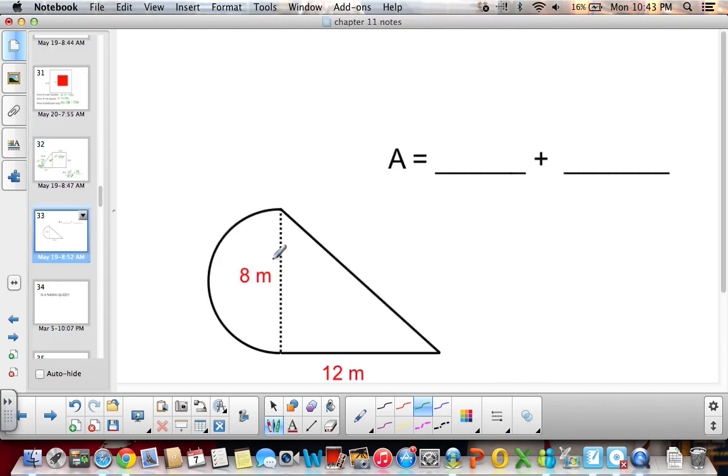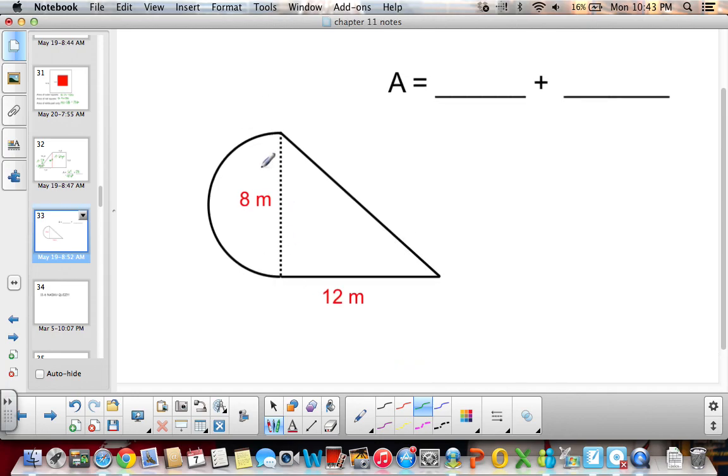And then our last example deals with a semicircle, which is this half circle right here. So we have a circle and we have a triangle. Remember the area of a circle is pi r squared. A semicircle, which is half of a circle, this is a full circle, this is a half circle. So the area would be half times pi r squared. It's like you're taking the area of a full circle and then dividing it in 2.